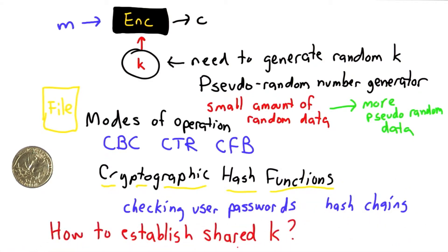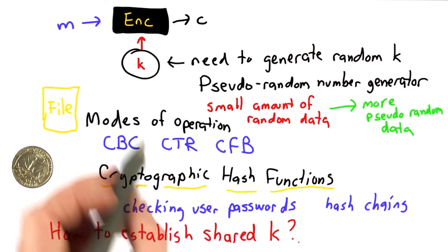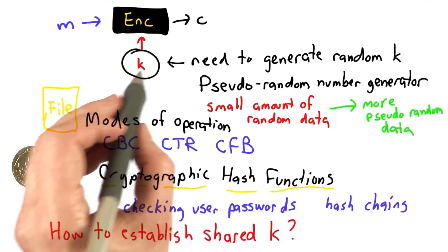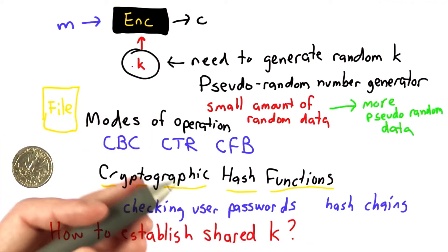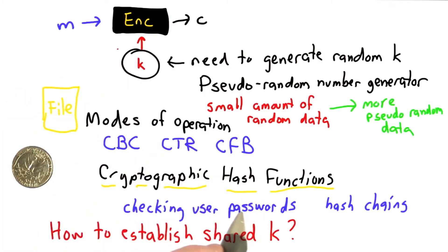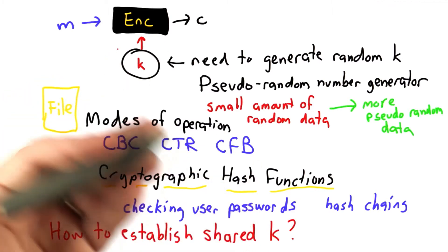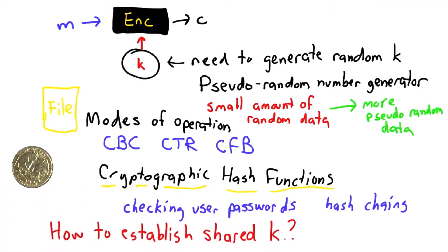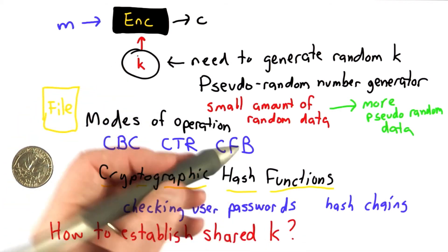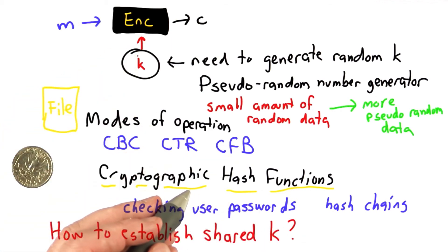The big problem we haven't addressed yet is how to establish a shared key. If we want to use a symmetric cipher to allow two parties to communicate, will they have to agree upon the shared key beforehand? If you think about most ways we want to communicate today, that's very difficult. If you visit a secure website, you don't have a shared secret with them to begin with, but you want to start communicating securely with them despite not having a shared secret. For most uses of cryptography today, this is a really big problem. We can't assume that we have a shared secret with every website that we want to use.